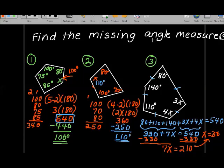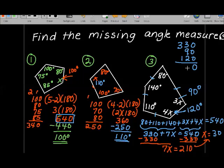It says find the missing angle measures, which means I need to substitute this value of 30 back in. Instead of 3x, I've got 3 times 30, or 90 degrees. And 4 times x is 4 times 30, that's 120. I can verify by adding these up. My numbers all added to 330, so adding 90 and 120 gives me 540. It worked out.